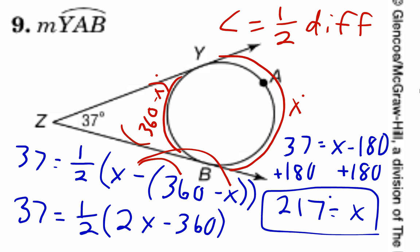Remember: when the intersection is outside the circle, the angle is half the difference of the arcs. When the intersection is on the circle, the angle is half of the arc. And when the intersection is inside the circle, the angle is half the sum of the arcs.